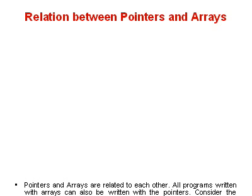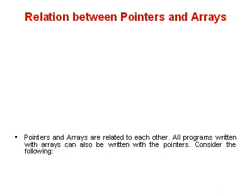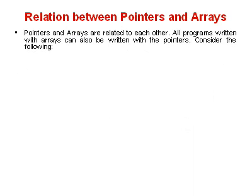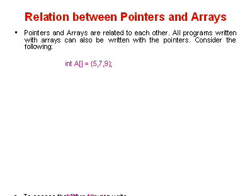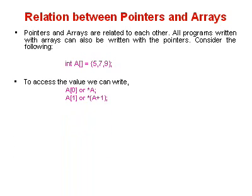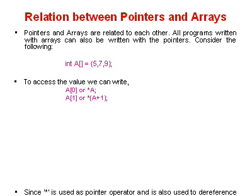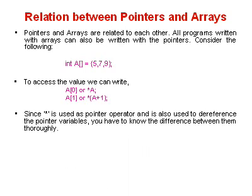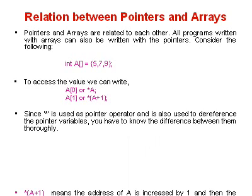So what is the relation between pointers and arrays? Pointers and arrays are related to each other. All programs written with arrays can also be written with pointers. Consider the following: here we have declared and initialized an array a as {5, 7, 9}. To access the value of this array either we can write a[0] or *a — both give 5. Similarly we can write a[1] or *(a+1). Since the star operator is used both as a pointer operator and to dereference pointer variables, you have to know the difference between them thoroughly.